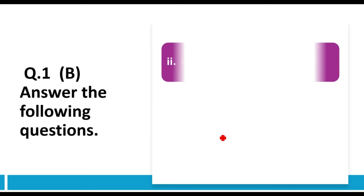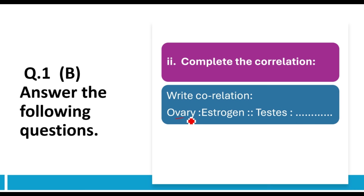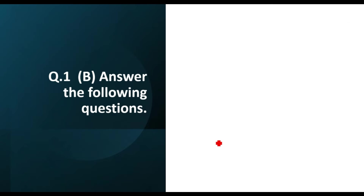Question two — correlation: The ovary is a female reproductive organ that produces the hormone estrogen. Then in the male reproductive system, the testis produces which type of hormone? The answer is testosterone. You can write the entire question with the fill-in-the-blank, underline the answer 'testosterone,' and that correlation format gives a better impression on the examiner.